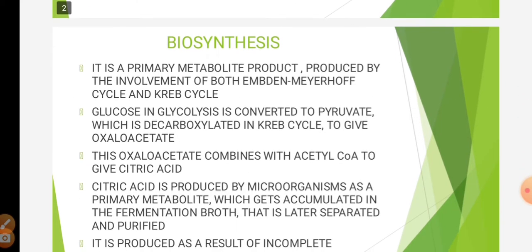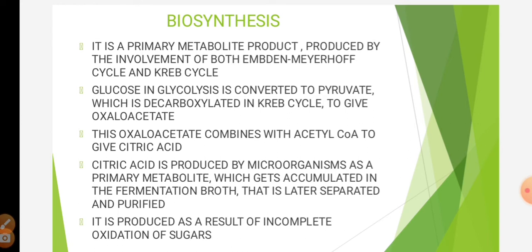Let us see first the biosynthesis of citric acid — that is, the biological process by which citric acid is produced in nature. Citric acid is a primary metabolite product which is produced by the involvement of glycolysis and Krebs cycle. The other name of glycolysis is the Embden-Meyerhof pathway. In glycolysis, glucose is first converted to pyruvate, which is then decarboxylated in Krebs cycle to give oxaloacetate. This oxaloacetate next combines with acetyl coenzyme A to give citric acid. Citric acid is produced by microorganisms as a primary metabolite during the tropophase, which then gets accumulated in the fermentation broth and is later separated and purified. Citric acid is produced by organisms as the product of incomplete oxidation of sugars.